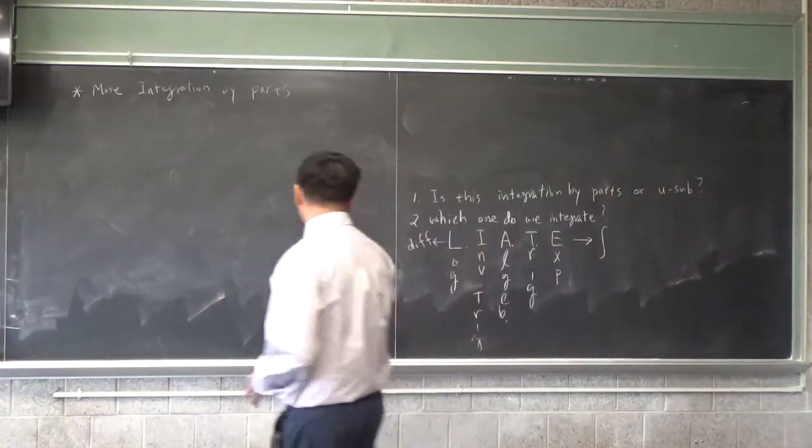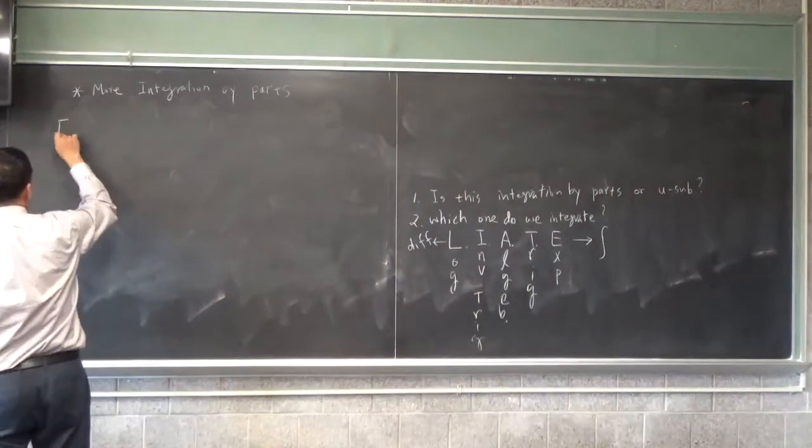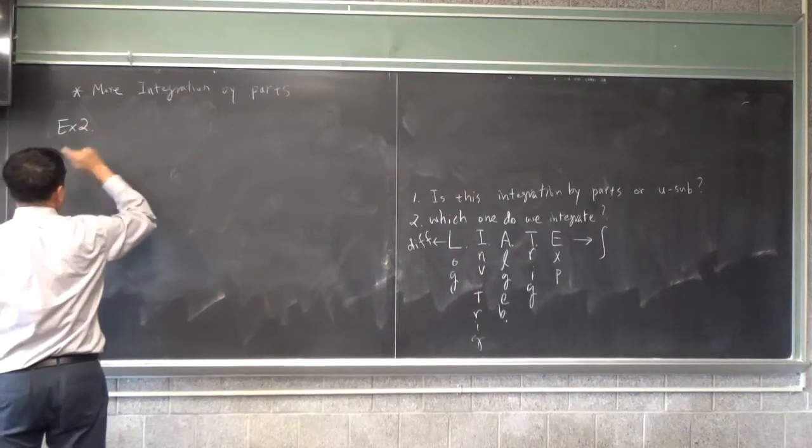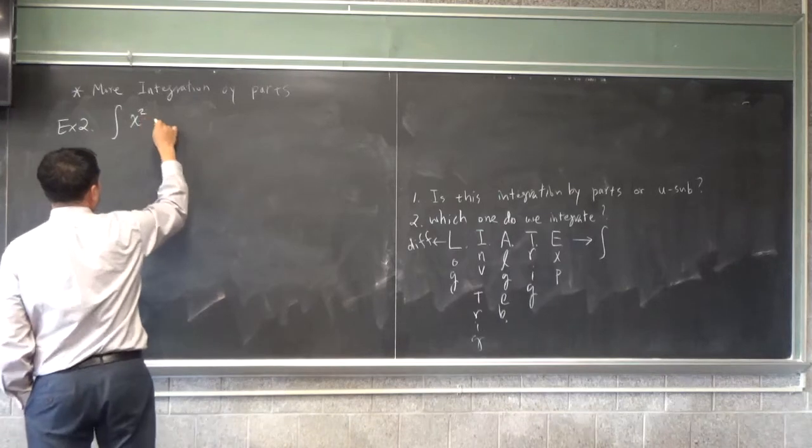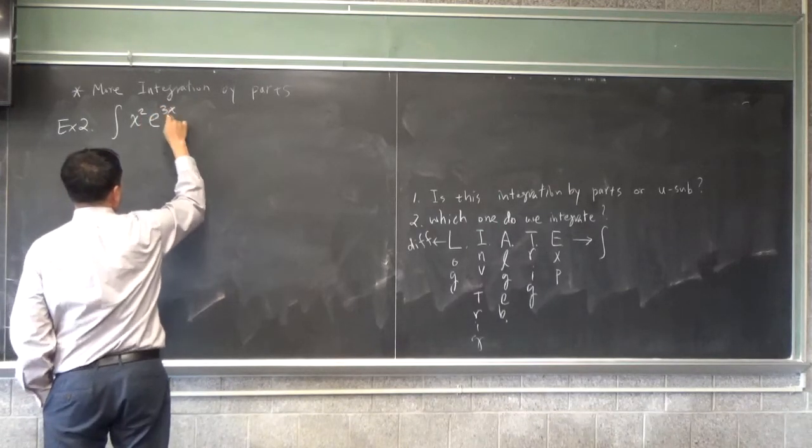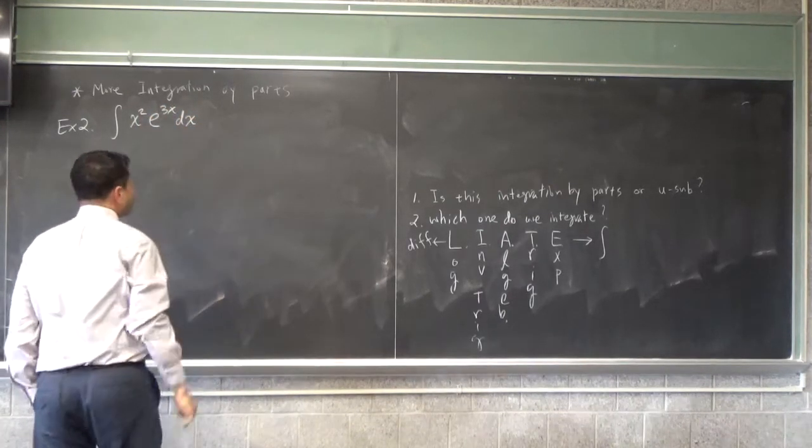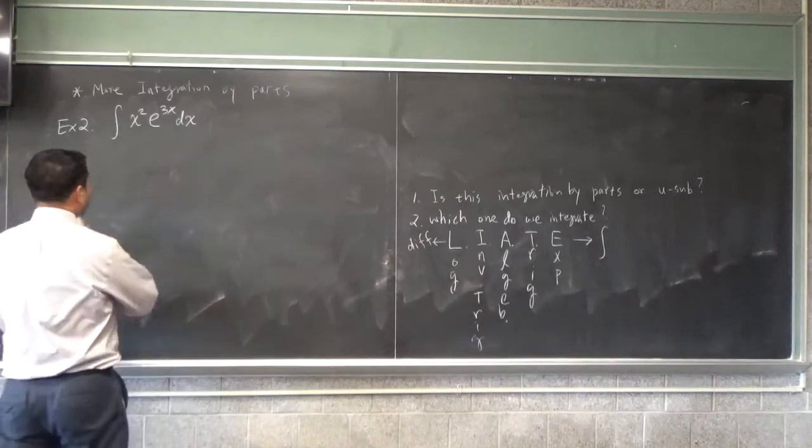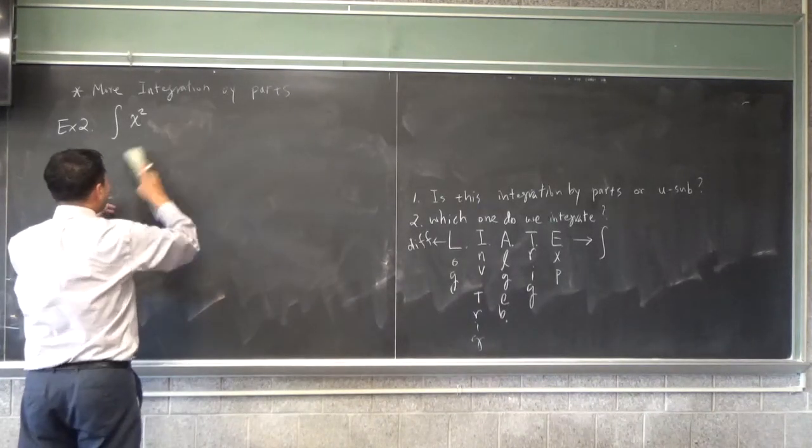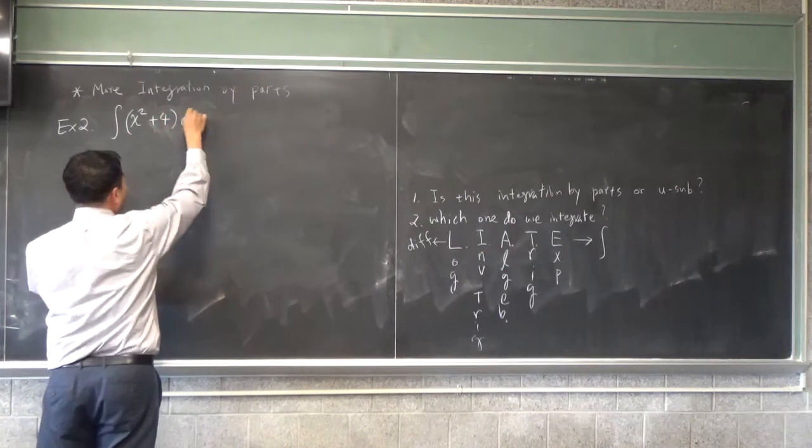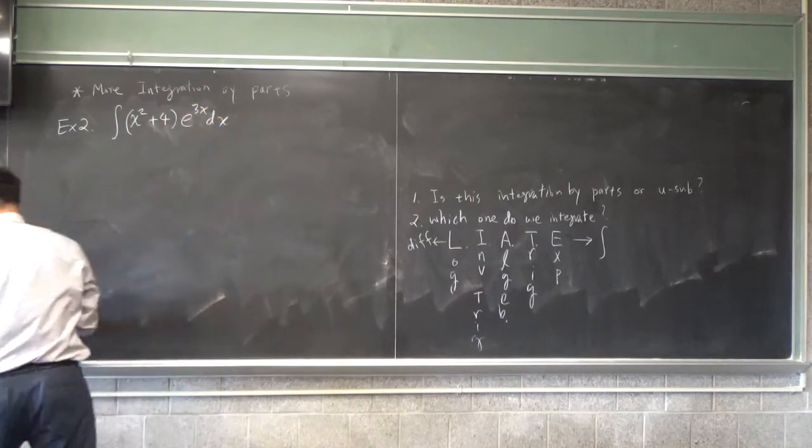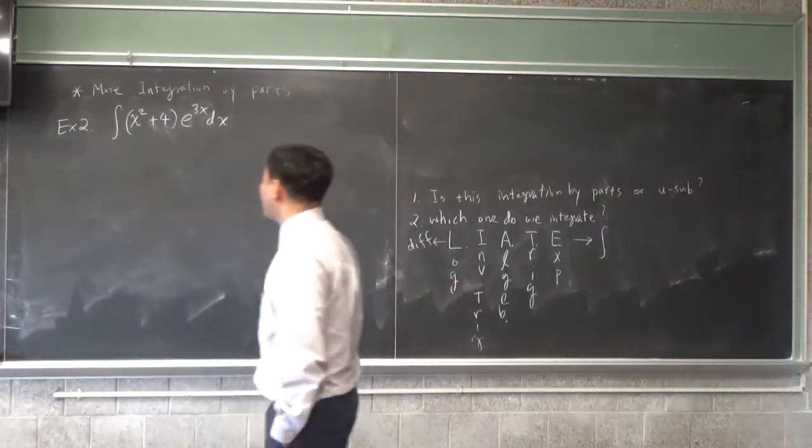All right, so let's try another example. This time let's try integral of x squared e to 3x dx. We did something like this before, so let's make it slightly more complicated. So let's try this one.